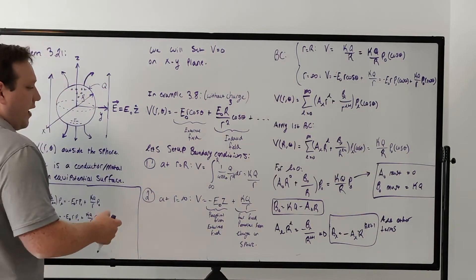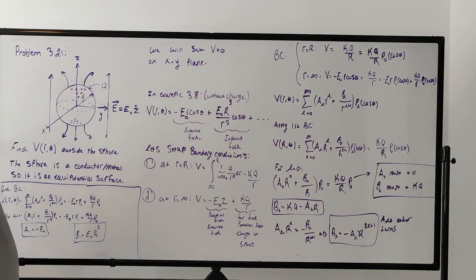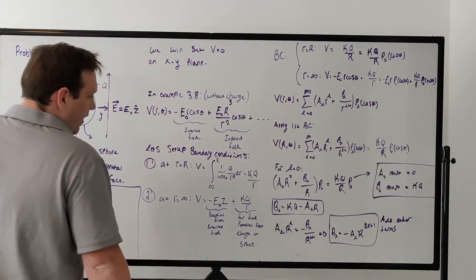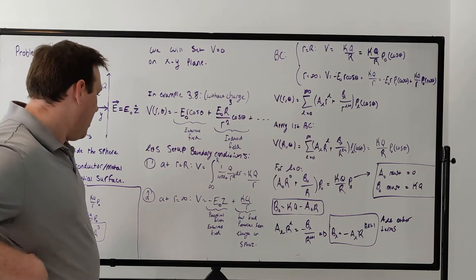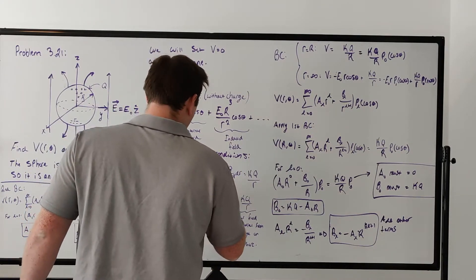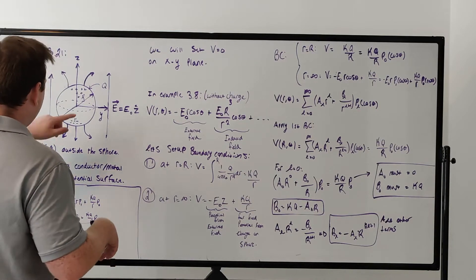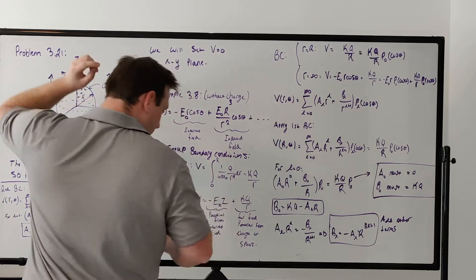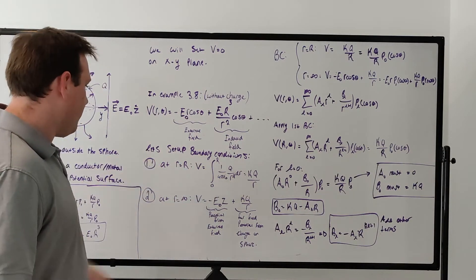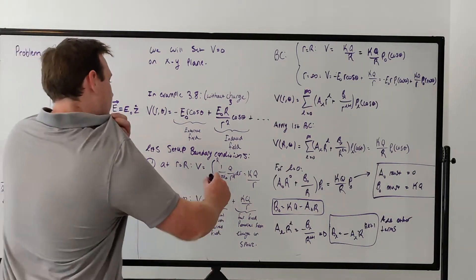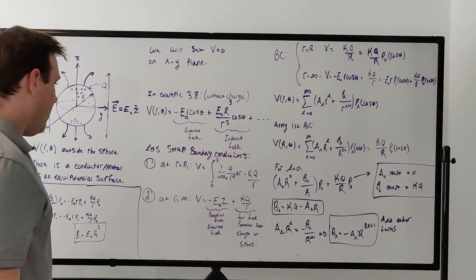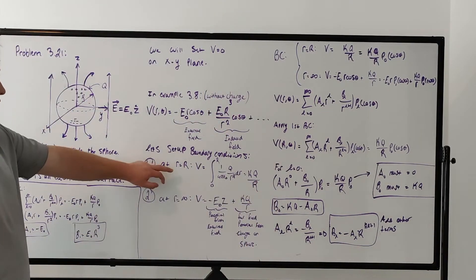Our two boundary conditions: at the surface of the sphere (r = R), if the potential is zero on the xy plane, then the potential at radius R is the integral from zero to R, which gives us kQ/R. This is the standard electrostatics result, so our first boundary condition is that the potential at r = R equals kQ/R.